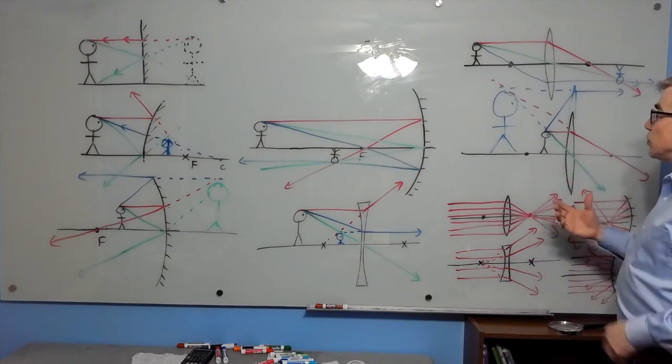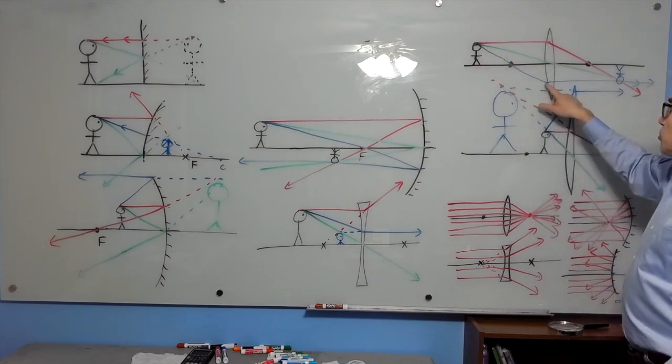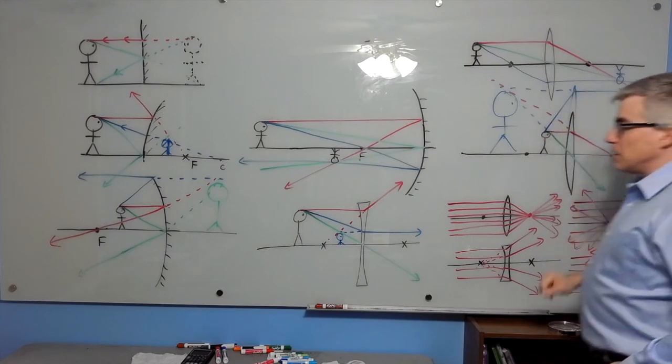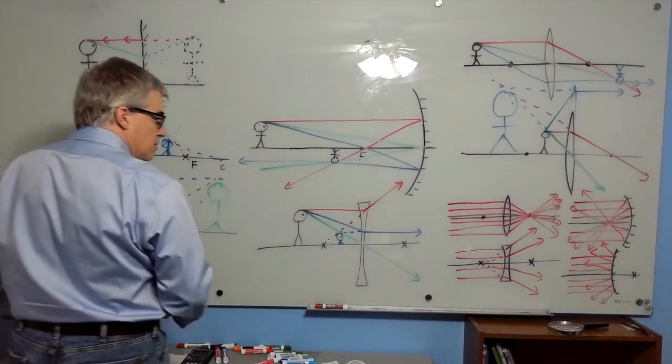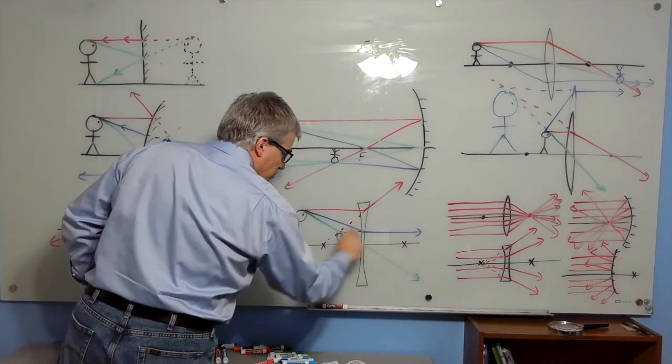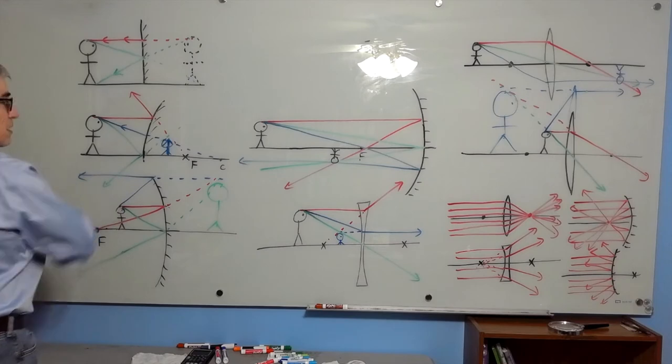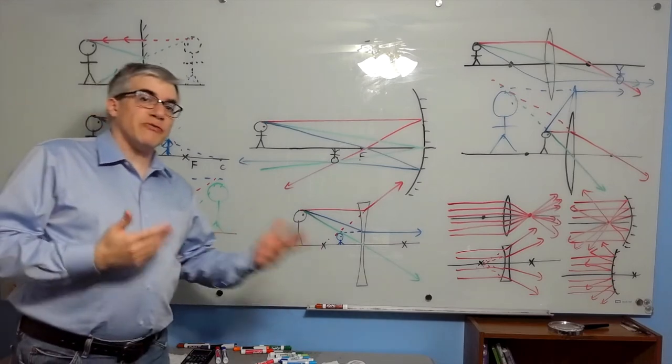The blue beams are like the reverse. If you go through the focal point, you end up parallel. Go as if through the focal point, end up parallel. Through the focal point, ends up parallel. Aim at that focal point, you end up parallel. Come as if from the focal point, you go parallel. So the blue beams are just the reverse of the red beams.